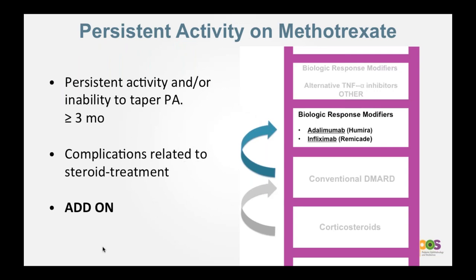What happens if the child is on methotrexate for three months — the time for it to fully become effective, roughly four weeks to three months — and still has active uveitis? You wouldn't call it a failure before three months unless someone was having really bad complications. If she can't taper the drops or is developing complications, then you reach for biologic DMARDs. Importantly, you add on — not switch. You are not stopping methotrexate and starting a new drug; it's an additive treatment approach.